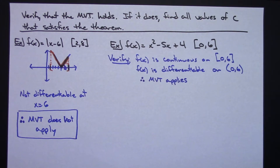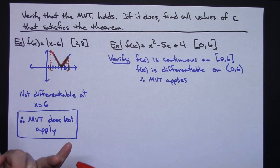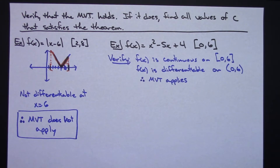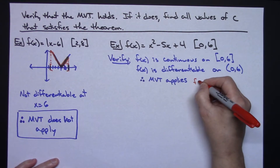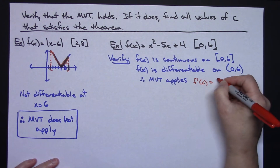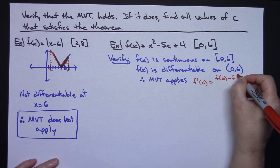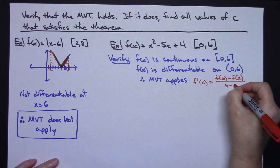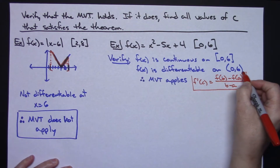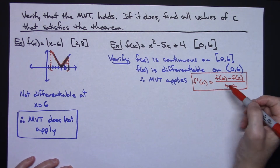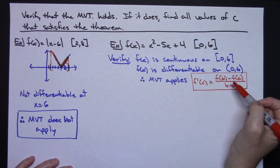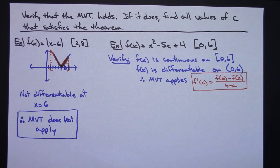Now I need to find all values of c that satisfy the theorem. The derivative at c has to equal the average rate of change — that is, f of b minus f of a all over b minus a. That's the key formula I've got to remember. So I can calculate this average rate of change, calculate the derivative of that function, then set the two equal and solve for my c.